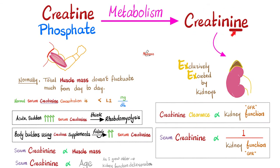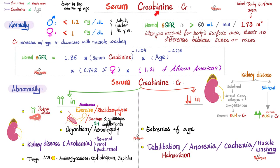Let's start with creatinine. Where did it come from? It's a product of metabolism of creatinine phosphate, which is in my muscle — a source of energy, called the phosphagen system. When you metabolize creatinine phosphate, it becomes creatinine. It goes to the blood and is excreted exclusively by your kidneys. No other organ excretes creatinine but your kidneys, and the kidney should excrete all of it — it should not reabsorb it back; instead, it dumps all of it into the urine. We talked about serum creatinine before and the causes of elevated versus depressed serum creatinine.